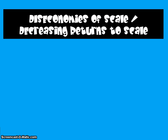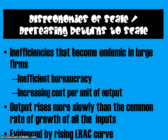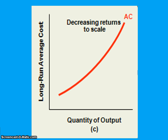The third scenario is decreasing returns to scale, or diseconomies of scale. Inefficiencies become endemic in large firms — inefficient bureaucracy and increasing cost per unit of output. Large firms can just become less efficient over time. Output rises more slowly than the common rate of growth of all inputs, placing you in the rising portion of your long-run average total cost curve. For example, doubling your labor force but only increasing output by 50% — you're putting in more than you're getting out.